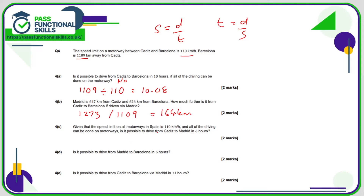The speed limit is 110 kilometres per hour on all motorways, so can you drive from Cadiz to Madrid in 6 hours? Cadiz to Madrid is 647, so we're working out time: distance divided by speed. 647 divided by 110 comes to 5.88 hours, which is less than 6 hours, so yes, it's possible.